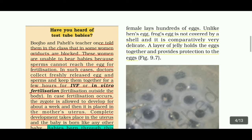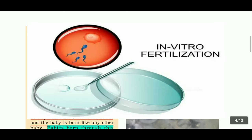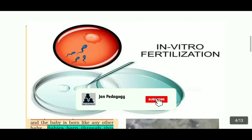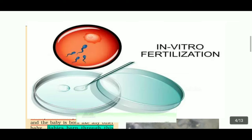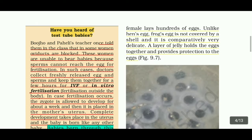In such cases, doctors collect freshly released eggs and sperms and keep them together for a few hours for IVF — in vitro fertilization. Fresh sperm is collected from the male body and a fresh egg from the female body, and they are combined using the IVF method. If fertilization occurs, the zygote is allowed to develop for about a week and then it is placed in the mother's uterus.